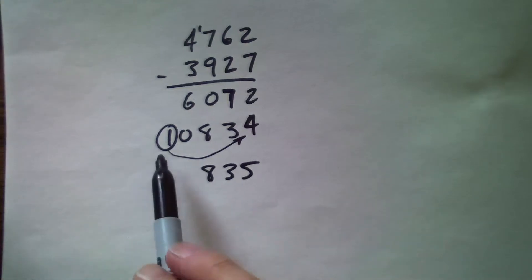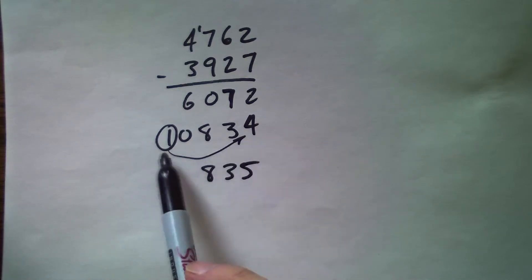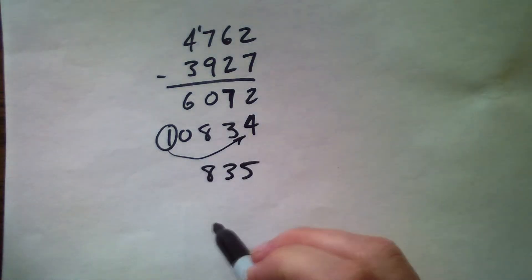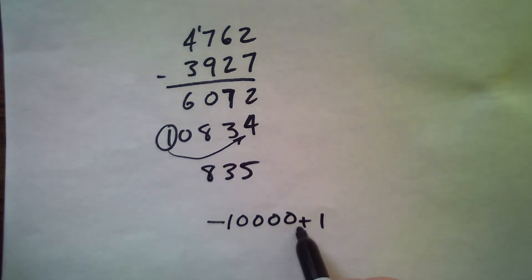When we take an overall view of what's going on, when we take that one and add it to the four, what we're actually doing is subtracting 10,000 and adding one. Well, negative 10,000 add one is the same as take away 9999.